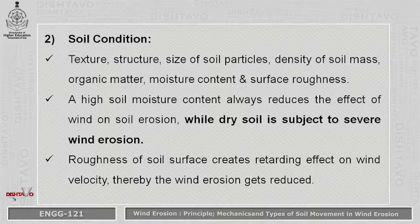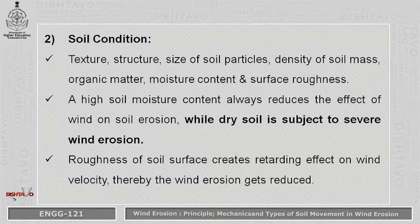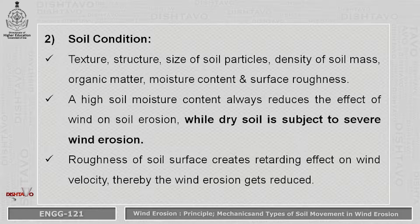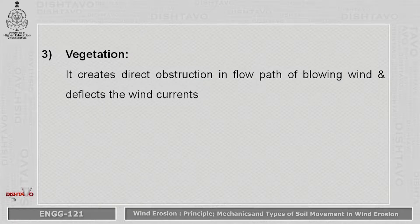The second factor is soil condition — soil properties like texture, structure, size of soil particles, density, organic content, moisture content and surface roughness characteristics of the soil. High soil moisture content always reduces the effect of wind on soil erosion, while dry soil is subject to severe wind erosion. The roughness of soil creates a retarding effect on wind velocity, so the rate of wind erosion is less in rough soil. The last factor is vegetation — if vegetation is present, it creates obstruction in the flow path of blowing wind and deflects the wind current.